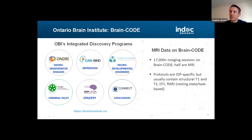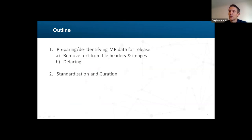We are actively releasing some of the neurodegenerative disease baseline tabular data, and in the new year there'll be depression and CAN-bind data and the neurodevelopmental disorder data. Each project is collecting MR data with their own protocols, typically involving structural T1, T2, DTI, and fMRI scans — resting state and task-based. I'll discuss how we de-identify data, including removing identifiable protected health information in text and facial features in the image, and briefly mention standardization and curation.